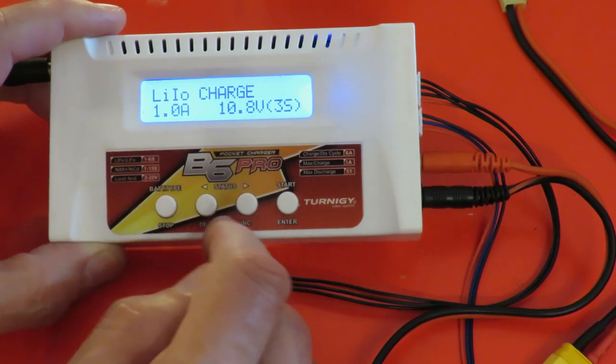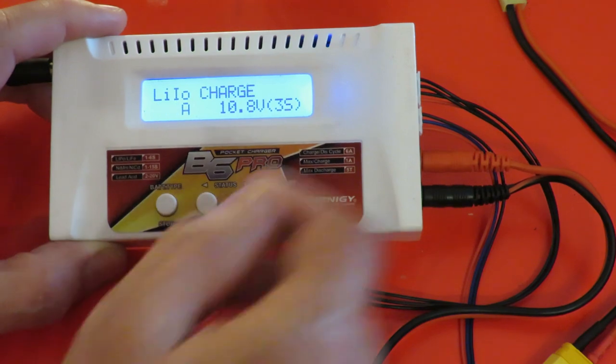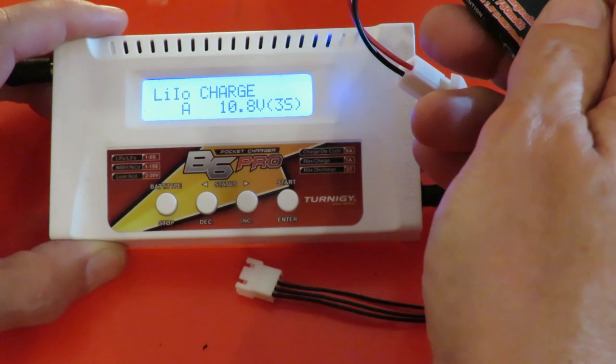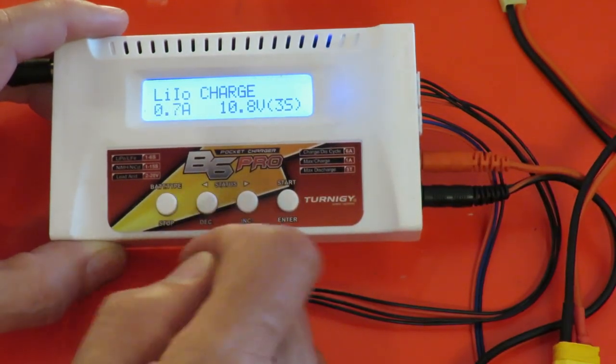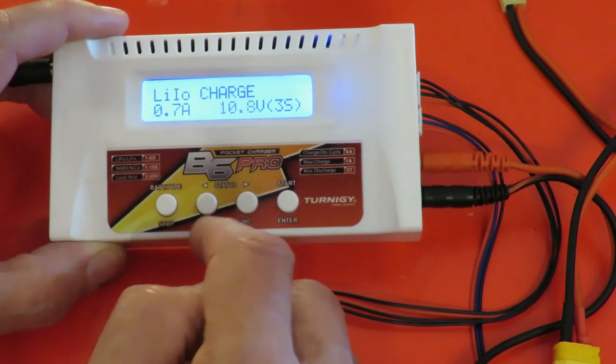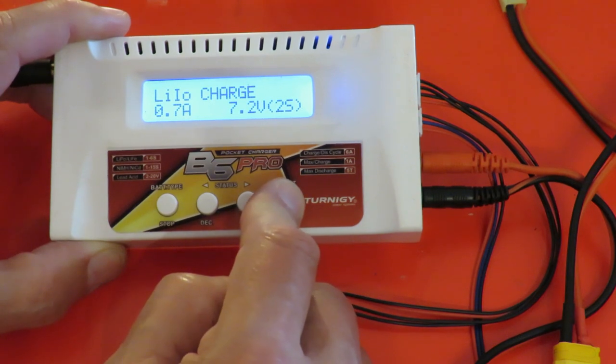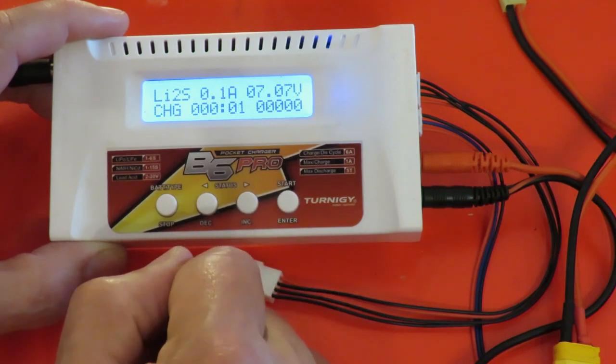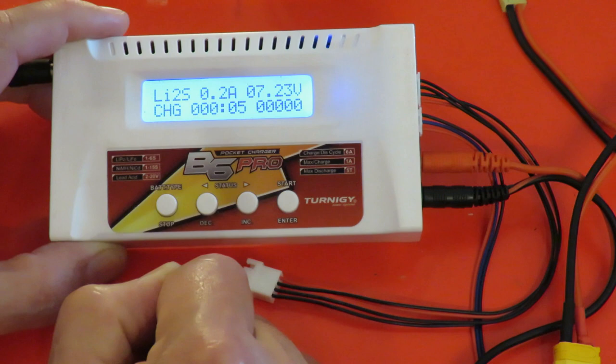We want a 2S, don't we? We'll drop that down a little bit. I can't remember what this one was. 750 milliamp hours. And then we want a 2S, 2S, yep, it's seeing it okay. Charging okay. Job done.